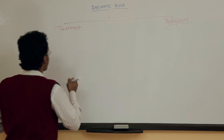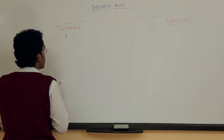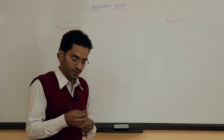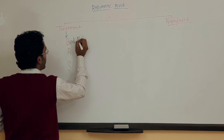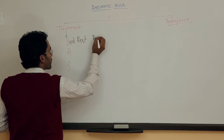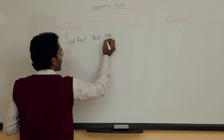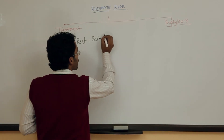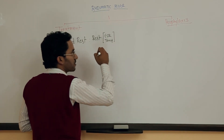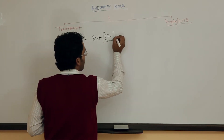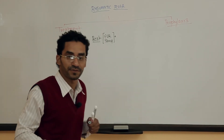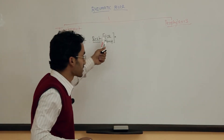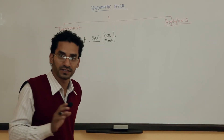What is the treatment of rheumatic fever? I will give you a mnemonic and the mnemonic is BAS. The first thing is bed rest. Rest depends upon ESR and temperature. If there is no carditis, we have to advise bed rest until ESR and temperature are normal. But if there is carditis, then we should advise bed rest 2 to 6 weeks after the ESR and temperature get normal.